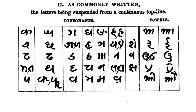They were employed to write and maintain records of revenue transactions, legal documents, title deeds, general correspondence, and proceedings of the royal courts and related bodies. The script used by them acquired the name Kaithi.